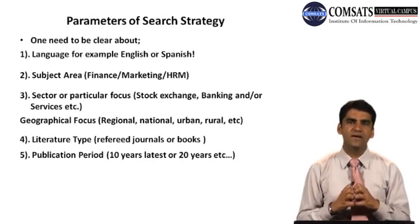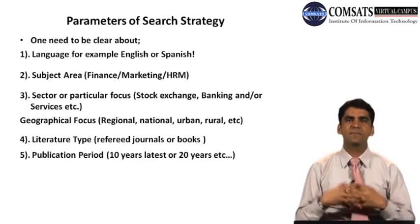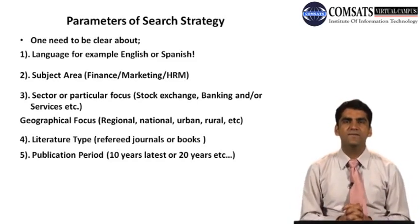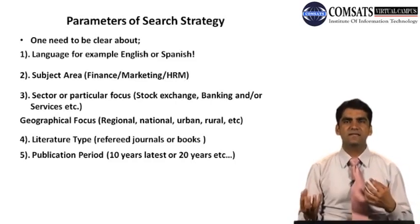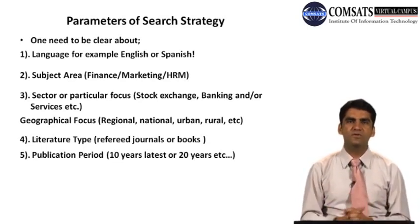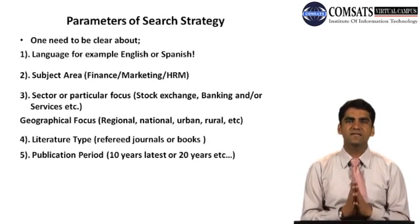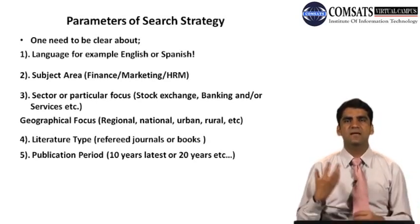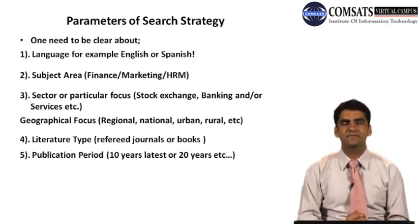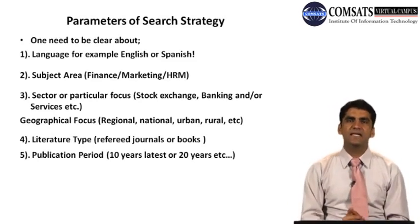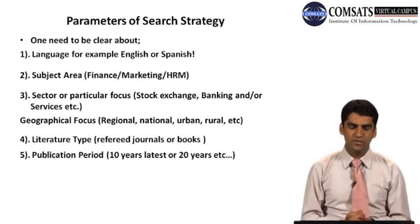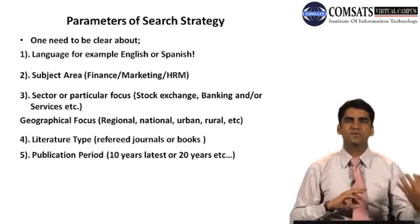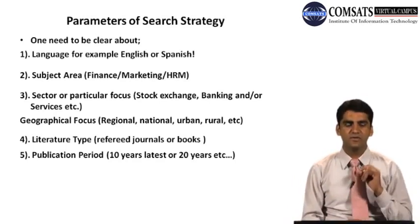Once you are clear about sectoral focus — stock exchange, banking, services, advertisement — and geographical focus — regional, national, urban, or rural — and what kind of literature type you are looking for — general articles, magazines, abstracts, conference proceedings, book chapters, or all options — and the publication period — 10 years, 20 years, 30-40 years, or from 1960 to the present — you will be in a good position to define your keywords. For example, you might want the latest 10 years, or from 1950 to 2012. Once you define these parameters for your search strategy, you can understand how to define the keywords precisely.